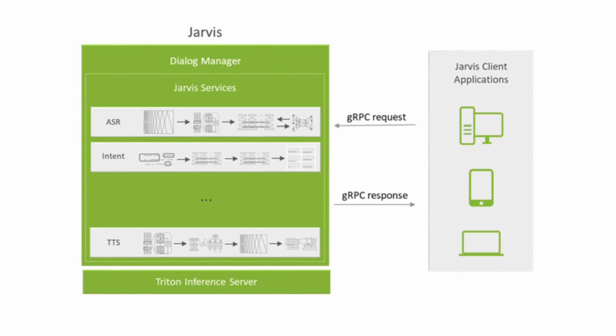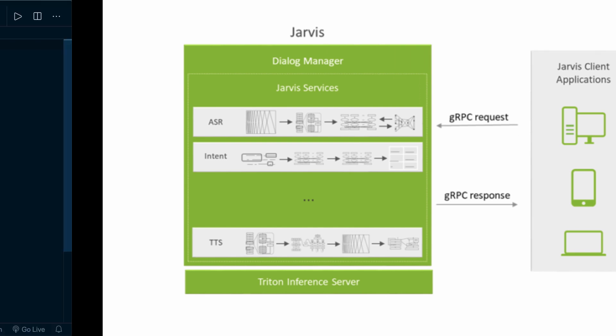We start a Jarvis server, which is the back end that serves all the services. Then all services are available via gRPC. On the client side, which can be our Python application, we create a gRPC connection, send a request to the service we need, and then get a response. That's actually pretty simple. Let's jump to the code and have a look at how we do this.